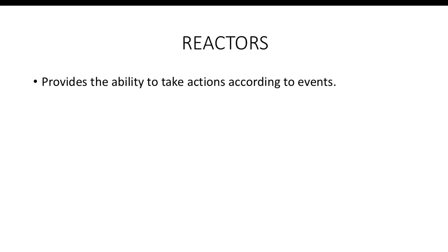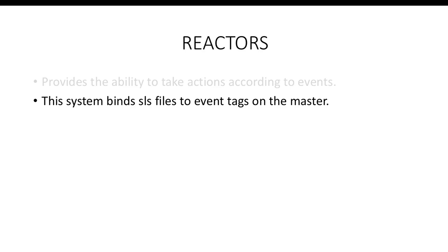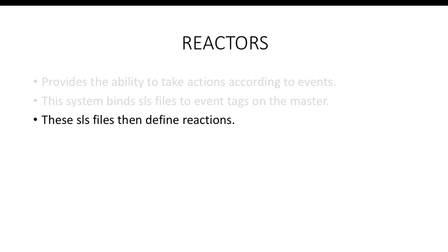Reactors. The reactor system provides Salt with the ability to take actions according to events. The events which are generated on the event bus have two parts. The first part is the name of the event or the tag, also known as topic or ID. The second part is the data part, which contains information about the event such as the time at which the event occurred, the daemons which were affected, and the severity of the event. The reactor system binds certain SLS files to specific event tags on the master. These SLS files are known as reactor files.